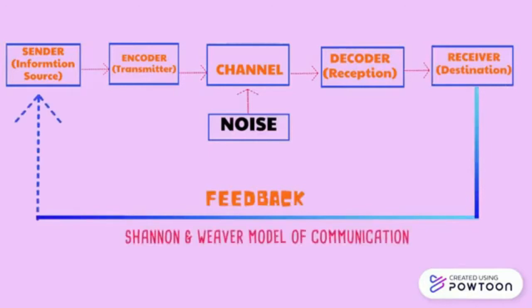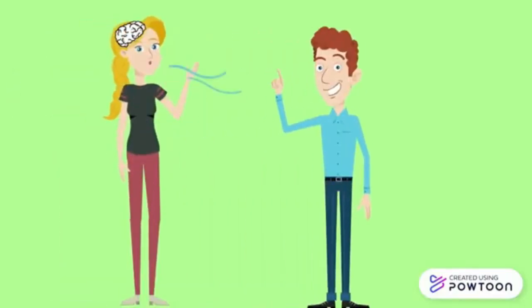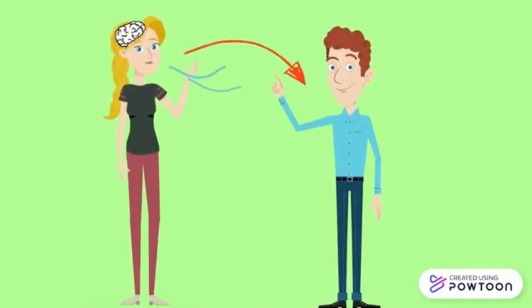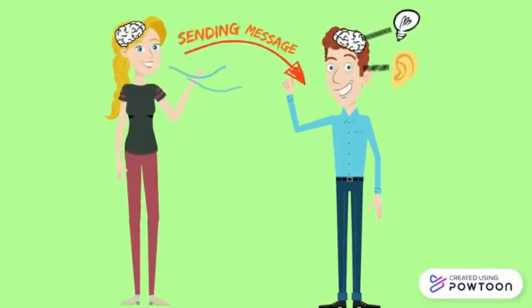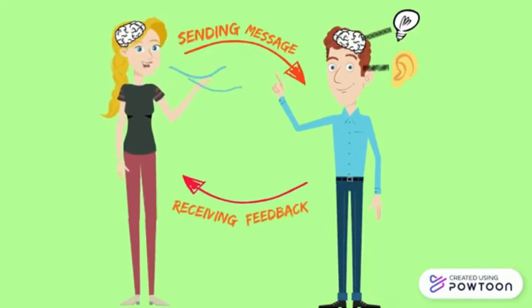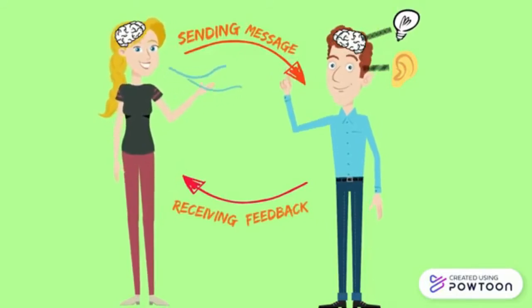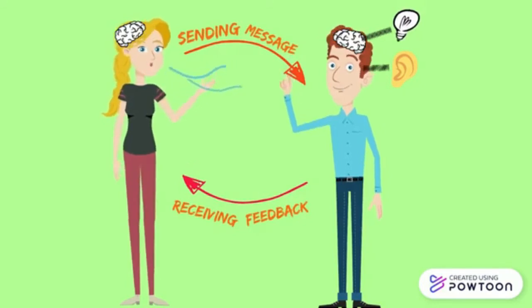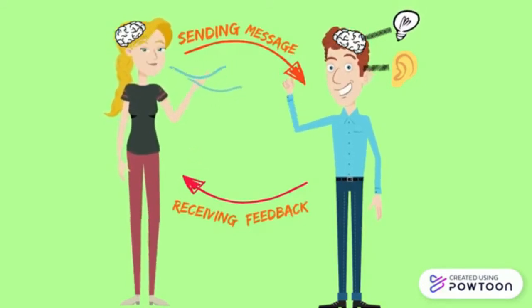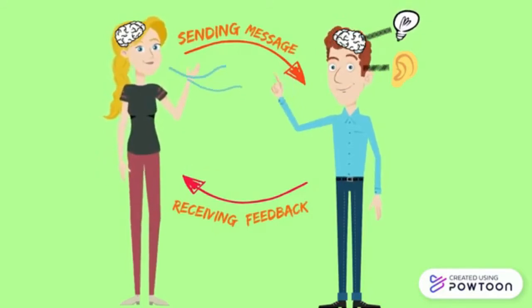The channel can have noise and the receiver might not have the capacity to decode, which might cause problems in the communication process. For instance, the brain might be the sender, the mouth might be the encoder which encodes to a particular language, air might be the channel, another person's ear might be the receptor and his brain might be the decoder and receiver. The disturbance present in the surrounding environment that disturbs them is nothing but noise. Whereas his response is the feedback to the message he received from the sender.